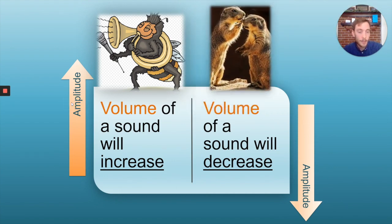Let's think of two meerkats whispering to each other. The amplitude of the sound waves created by the meerkats whispering is really low, so it produces a sound wave with low volume.